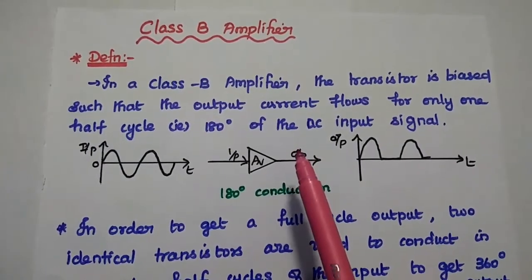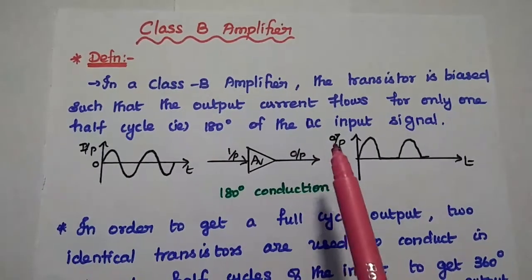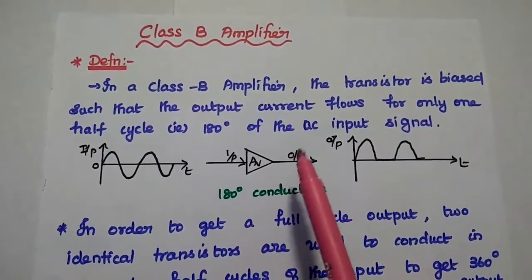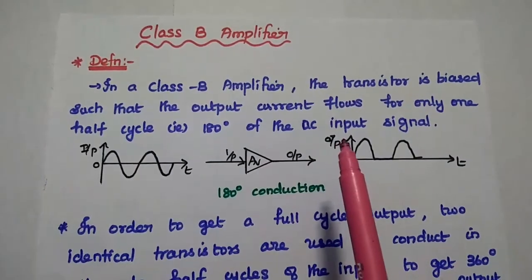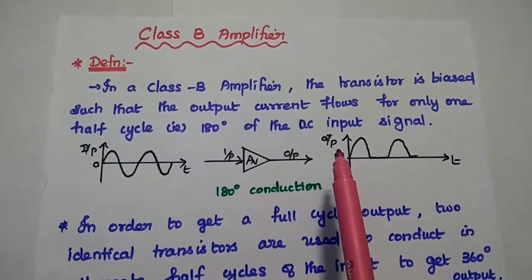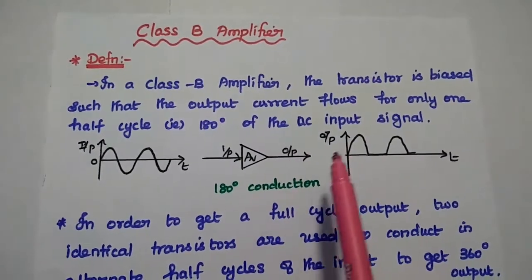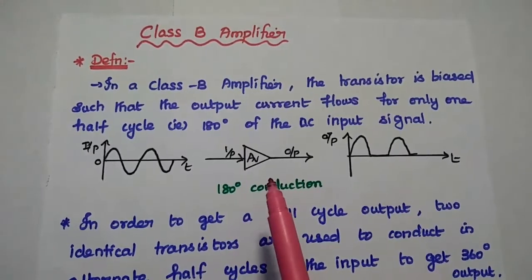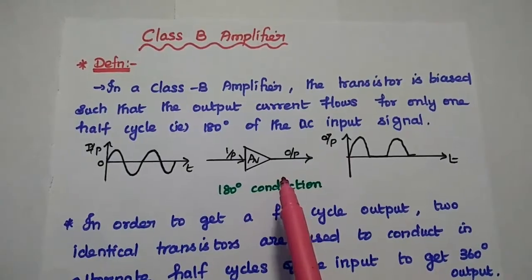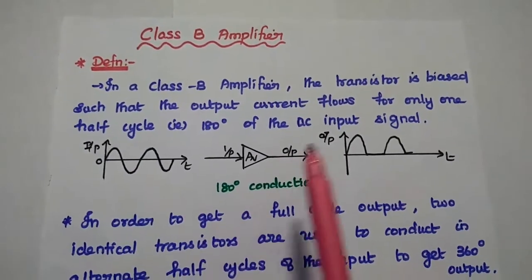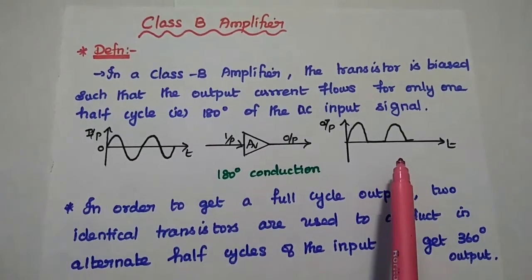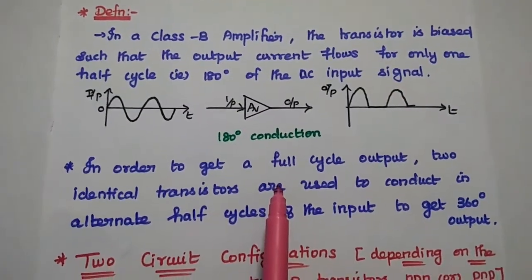Dear students, now we are going to discuss push-pull class B amplifier. Let's start with the definition of class B amplifier. In a class B amplifier, the transistor is biased such that the output current flows for only one half of the AC input signal. That means the transistor is switched on only for half of the input signal, producing a half-wave rectified signal. So it produces some distortion in the output.